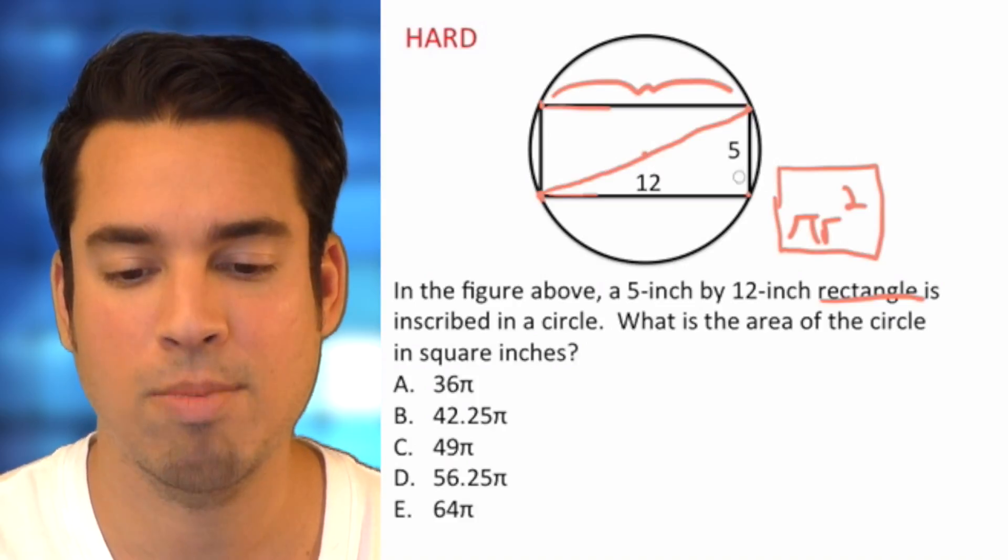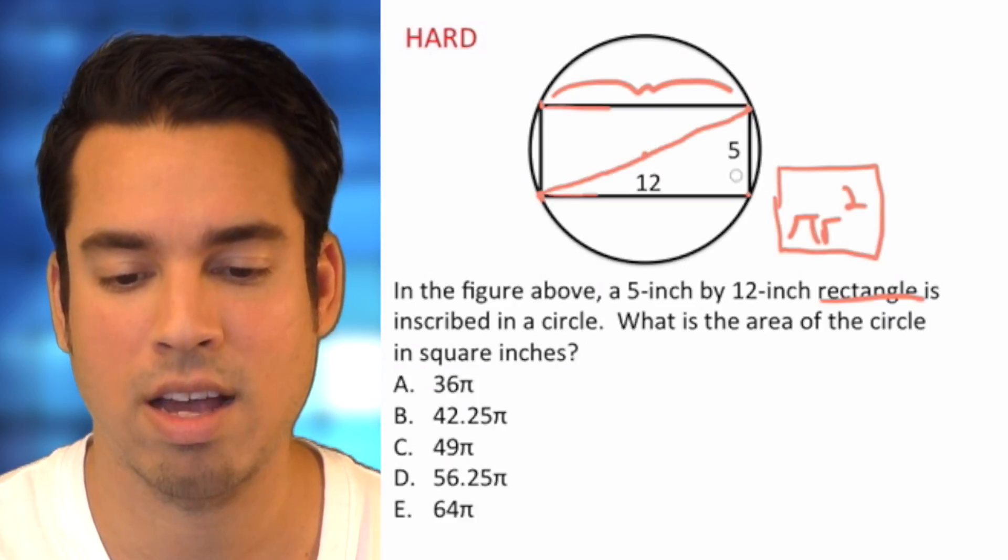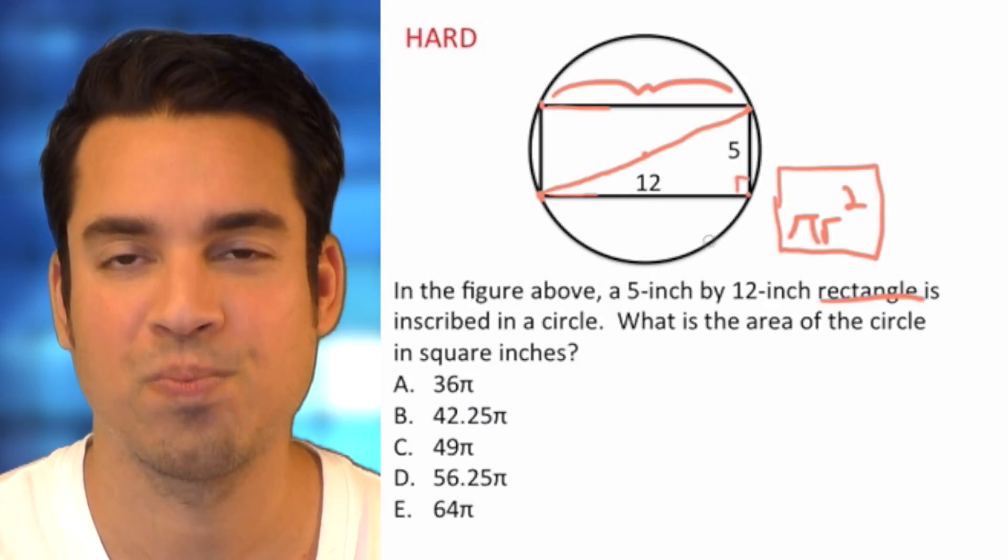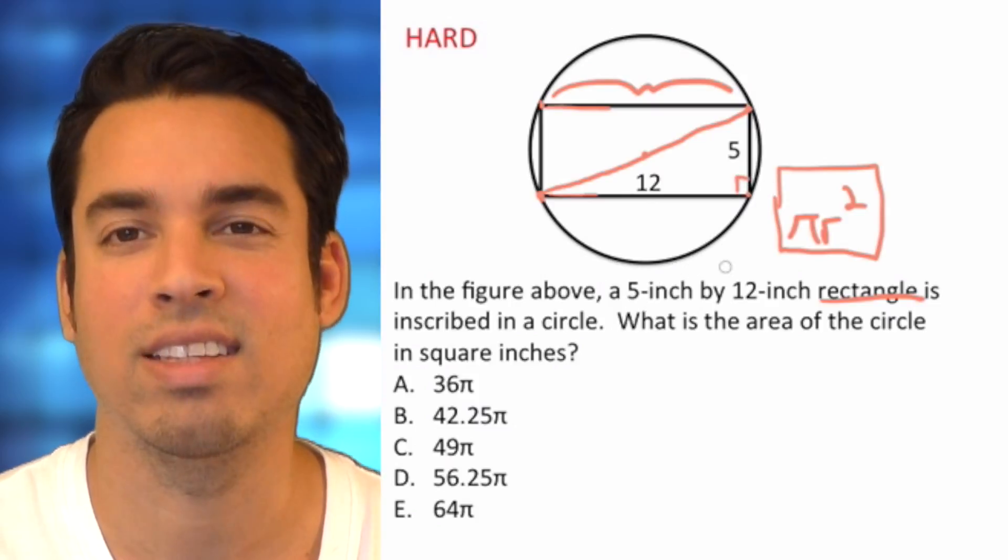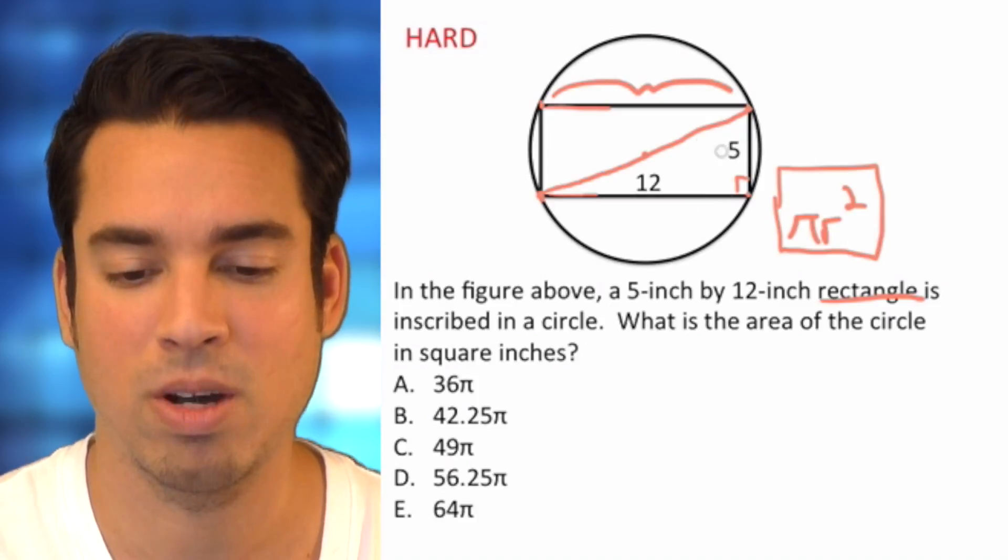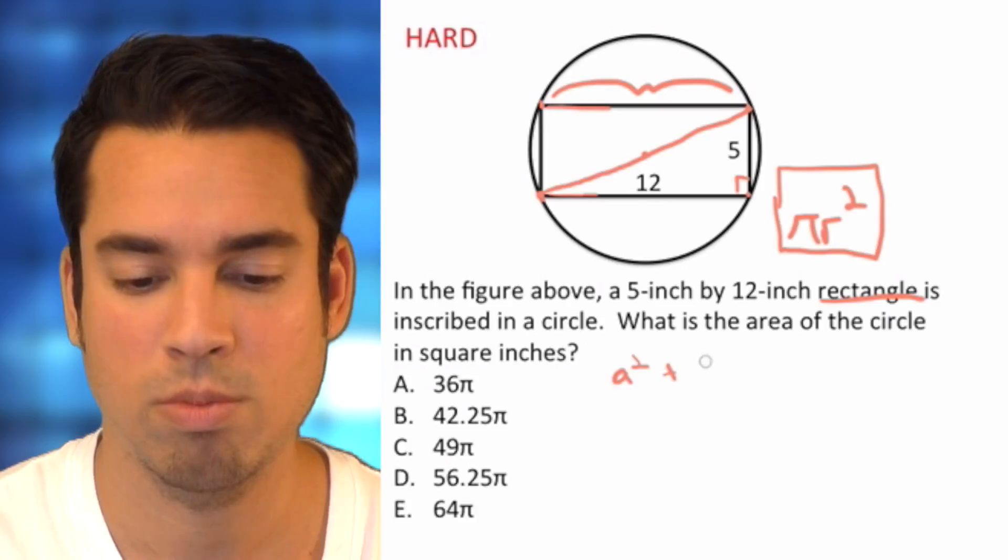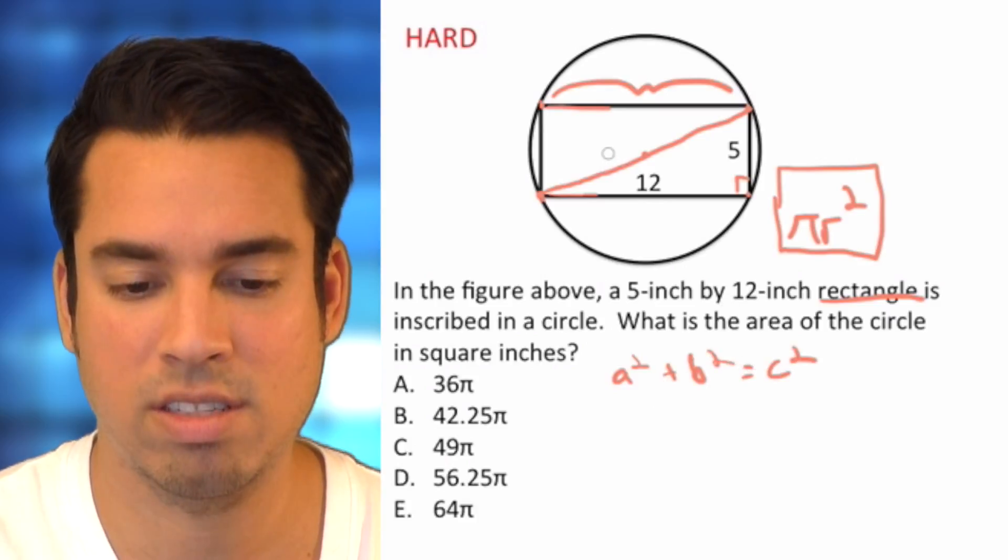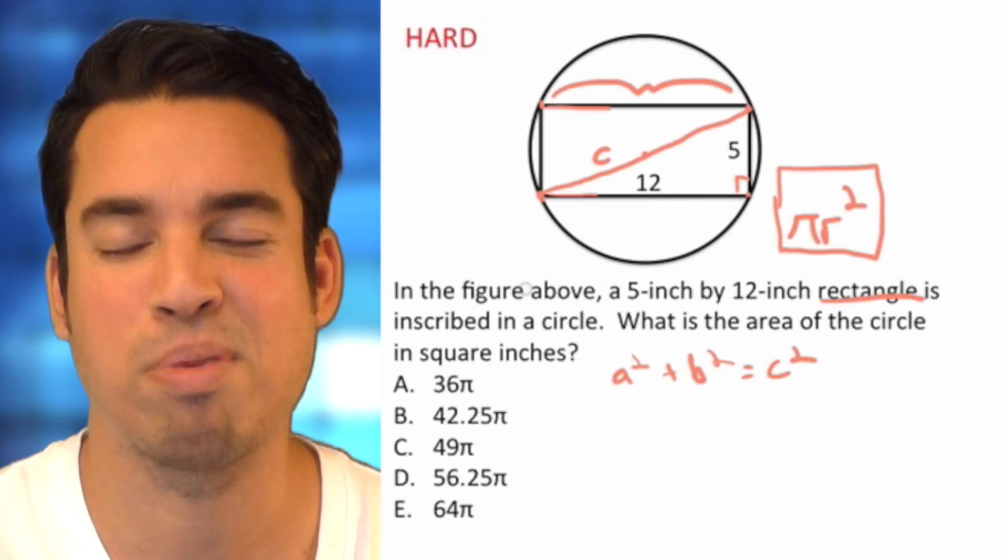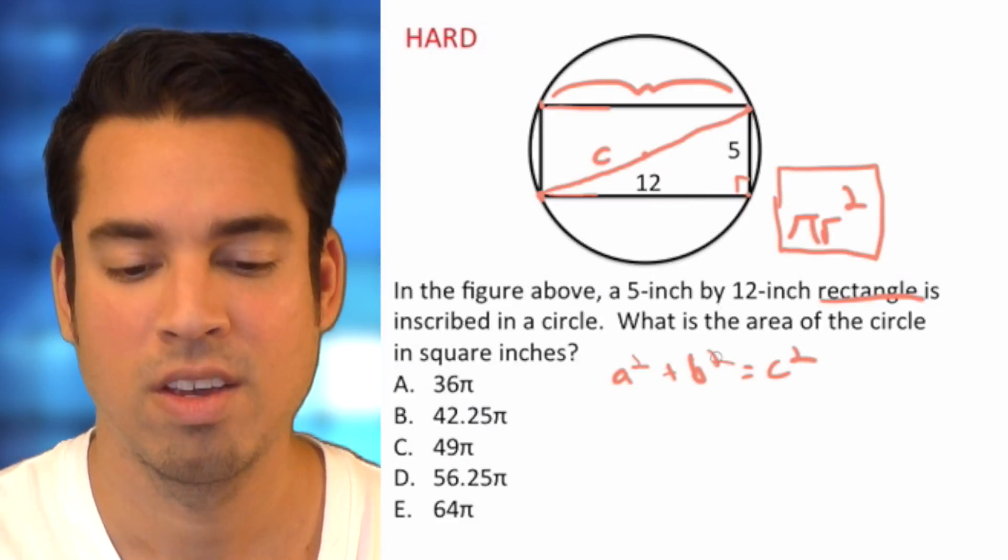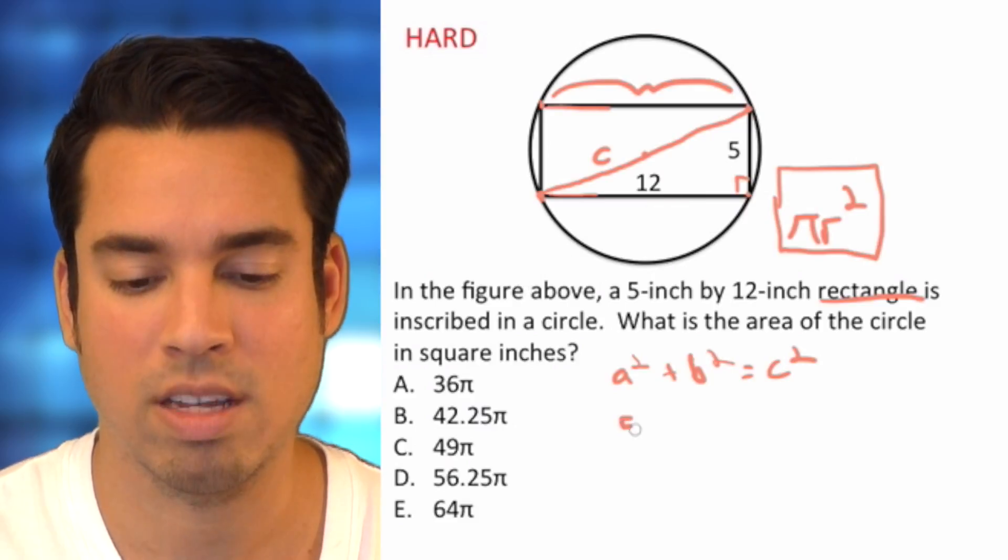But what is the value of this diameter? You'll notice when I drew this line here we've created a right triangle, so we can calculate this value using Pythagorean's theorem. We've got a squared plus b squared equals c squared, and our c value is that hypotenuse which is that diameter. So a squared would be, we can say, five.